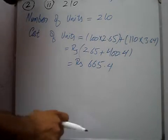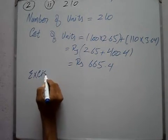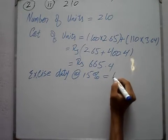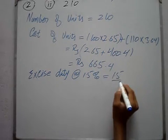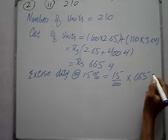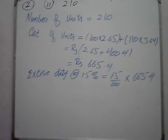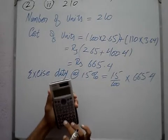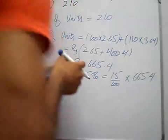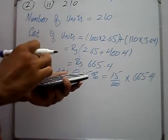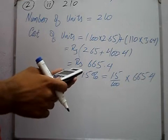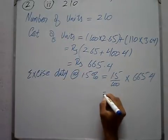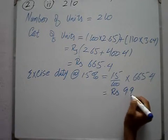Excise duty at the rate of 1.5%. So we find excise duty: 1.5 divided by 100, multiply by 665.4. This gives us RS 9.981.